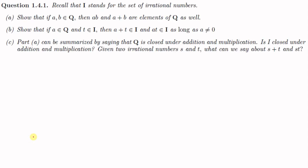We shall now see some questions from this section. Question number one: recall that I stands for the set of irrational numbers. Part a: show that if a, b are elements of Q then ab and a plus b are elements of Q as well. That means if a and b are two rational numbers — Q stands for the set of rational numbers — then a plus b and ab are also rational numbers.